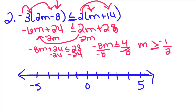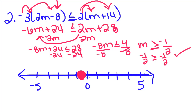We're going to find negative 1 half on our number line, which is going to be about right there, and we're going to put a circle on it. Since this is greater than or equal to negative 1 half, we're going to close this circle and fill it in. Because negative 1 half is less than or equal to negative 1 half — yes, that's true, so we can fill that in. My inequality is pointing that way, so I'm going to shade in this way.